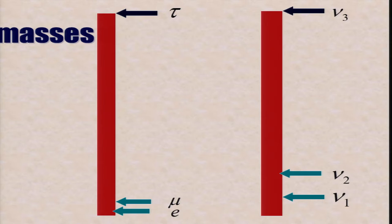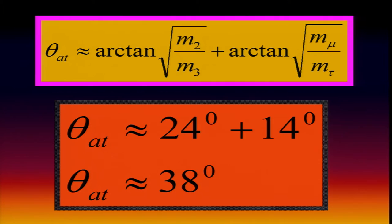Now, I can also calculate the atmospheric angle, which is just given by the square root of M2 over M3 and m_mu over m_tau. And once you do this, you get the sum of 24 plus 14 is 38 degrees, which agrees very, very well with the experimental value.